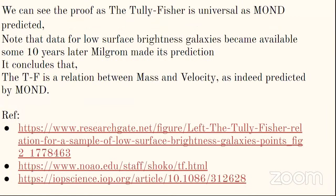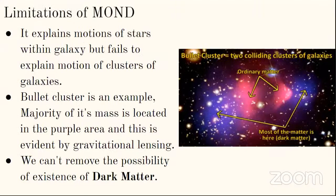When Milgrom proposed MOND theory, it was only 10 years later when data for low surface brightness galaxies became available — and it confirmed MOND's prediction exactly. This proved the empirical relationship between mass and velocity as predicted by MOND. Research articles on this are listed in the references. Moving to limitations of MOND and future work.